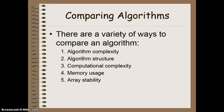How long is it going to take the computer to go through and sort what we're trying to sort? Number four would be the memory usage — how much extra memory is going to be required by our computer in the sorting algorithm we're going to use. And then finally, the array stability: when I try and switch the data around in my array, how stable is it? How likely is it to remain sorted when I sort for another attribute?